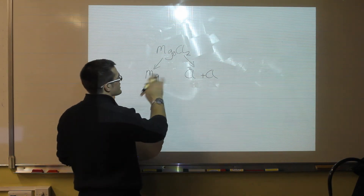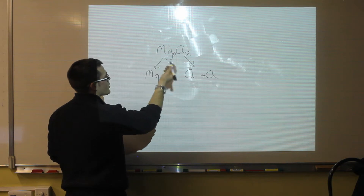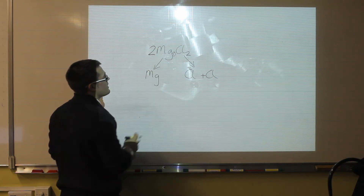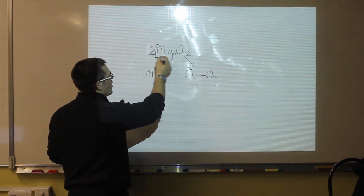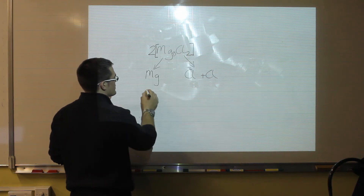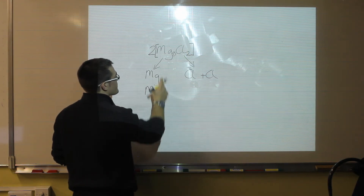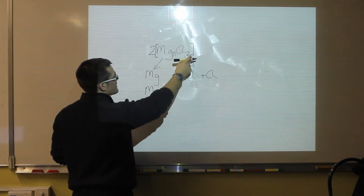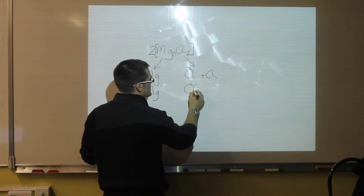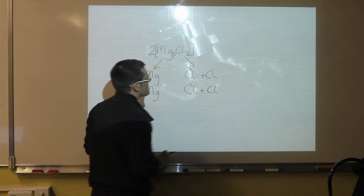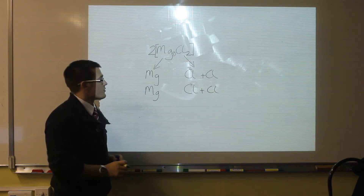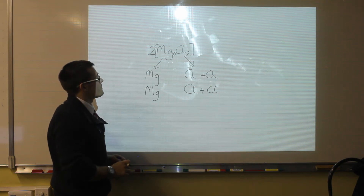If we were to change this, and say in our equation we had a two in front, that means we would have two of everything. So that means we would have an extra magnesium and two extra chlorines. If we had three at the front, we would have an extra set again.